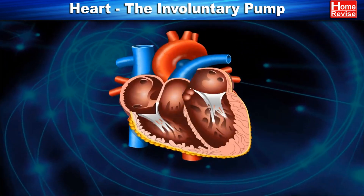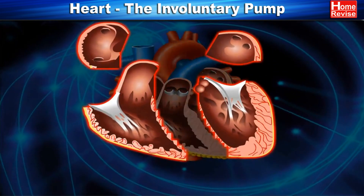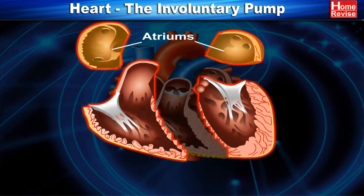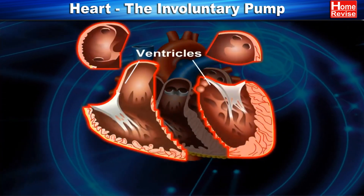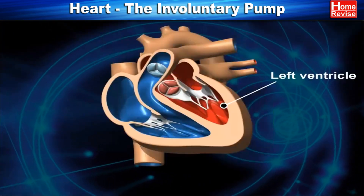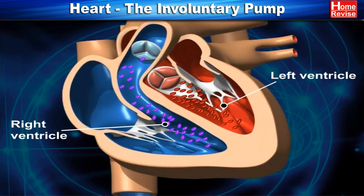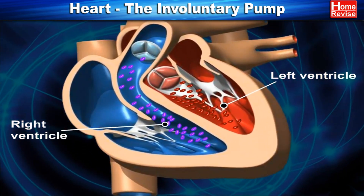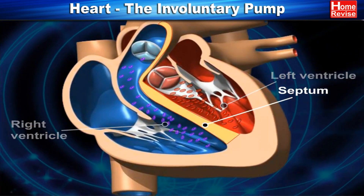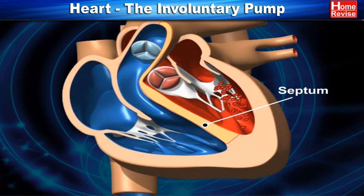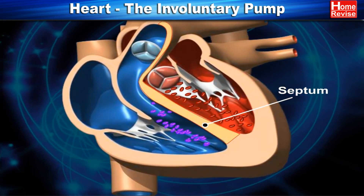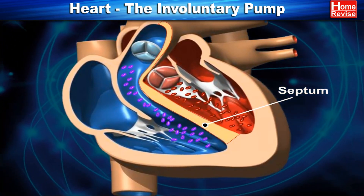Internally, the heart has four chambers: the upper two atria and lower two ventricles. The left and right parts of the heart are separated by a vertical septum to prevent oxygen-rich blood from mixing with blood containing carbon dioxide.